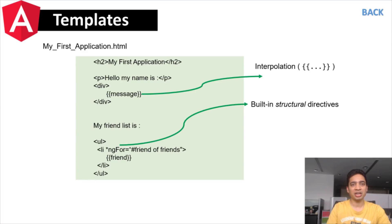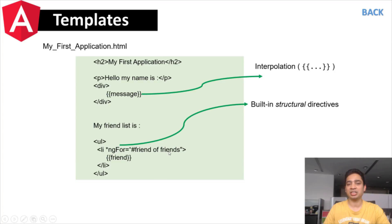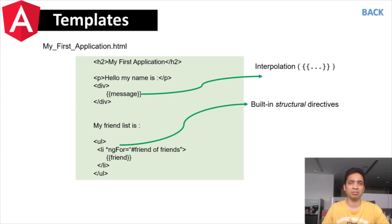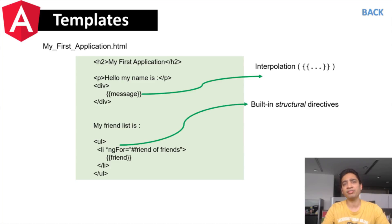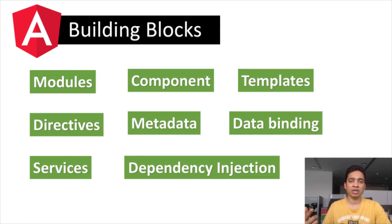Templates also include directives such as structural directives, which are responsible for HTML layouts. For example, `ngFor` iterates over a collection and prints each item. These are built-in structural directives. The key takeaway is that every component has a corresponding template — it looks like HTML, but some portions include Angular-specific syntax.